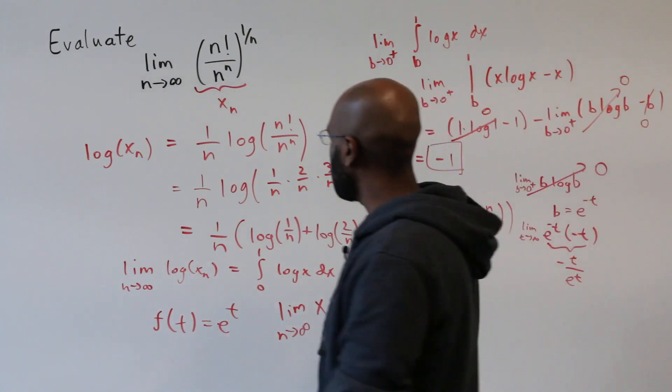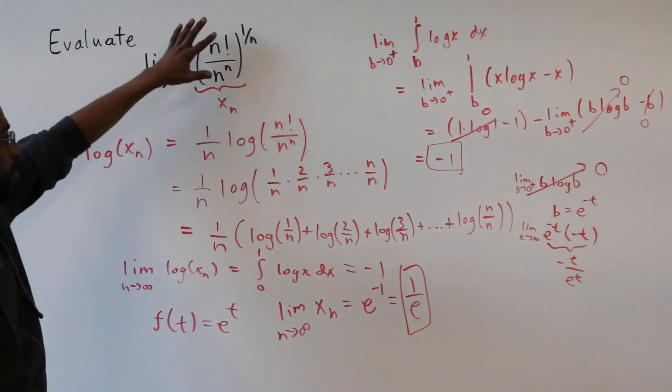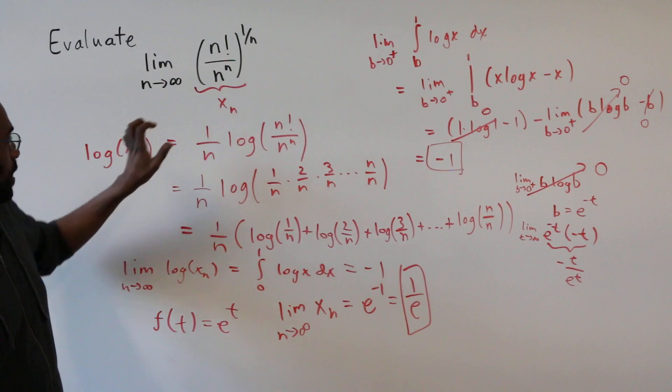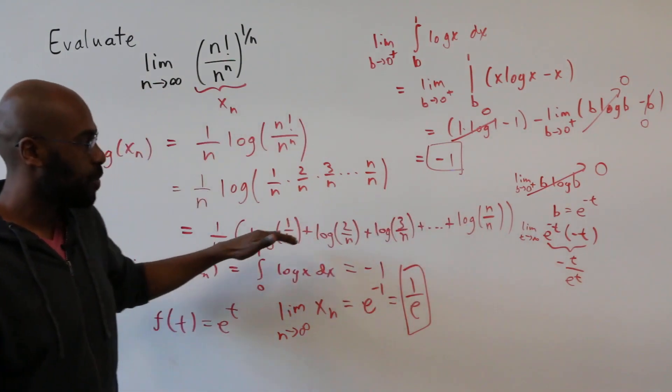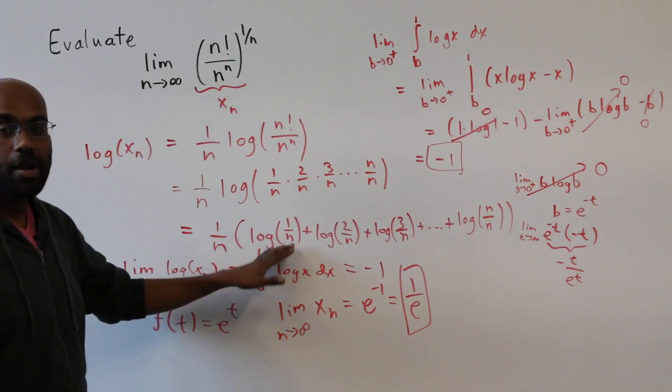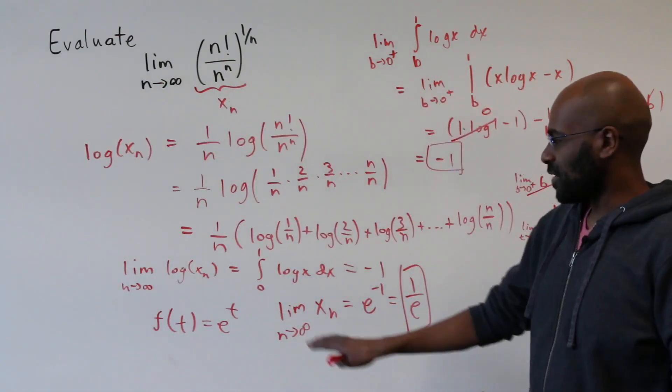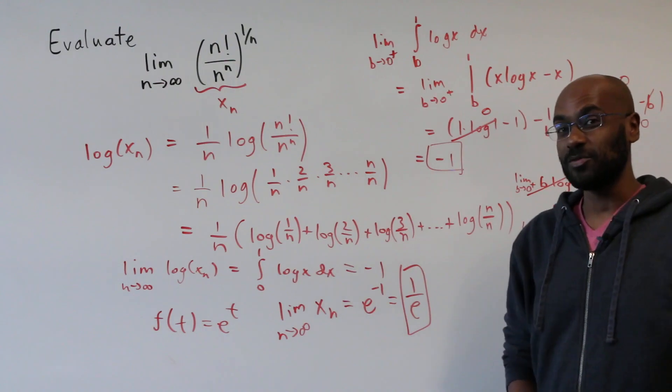Cool, so I think the moral of the story here is by taking logarithms we were able to represent this expression as a sum that actually approximated an integral, and then we were able to compute that integral to figure out what happens to the logarithm of our sequence, and hence what happens to our sequence.